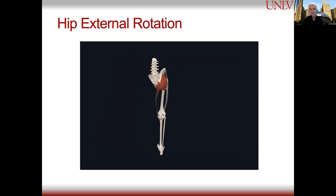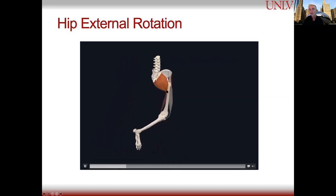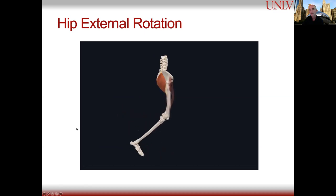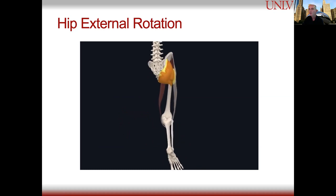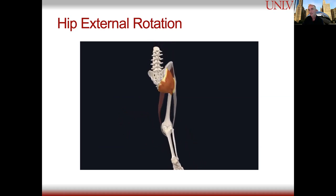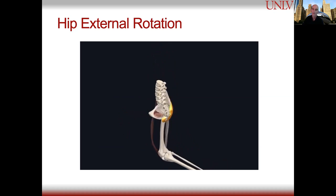The next movement is hip external rotation. Whether the knee is bent or straight, it's the outward rotation of the femur — mostly gluteus maximus, though gluteus medius also plays a role. In a sport like triathlon or running, it's not a movement we actively do, but it's a stabilizer and ultimately something we want working with us rather than against us.